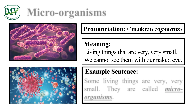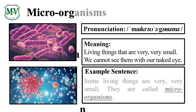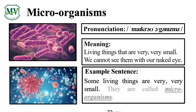Please repeat the word after me. Microorganisms. Good job! Let's spell it! M-I-C-R-O-O-R-G-A-N-I-S-M-S. Microorganisms! Great! Some living things are very, very small. They are called microorganisms. Can you try reading the sentence on your own?